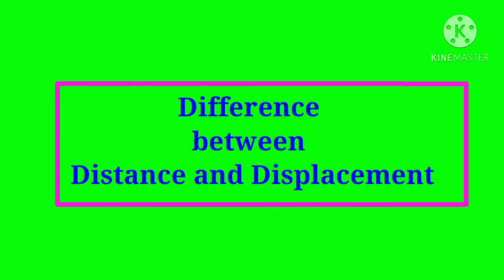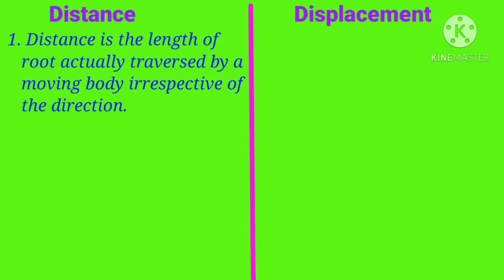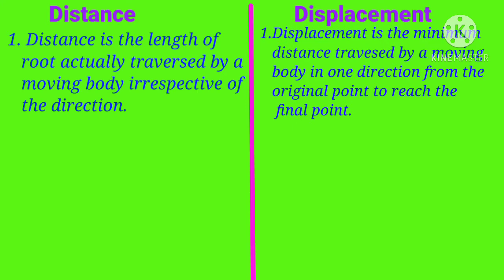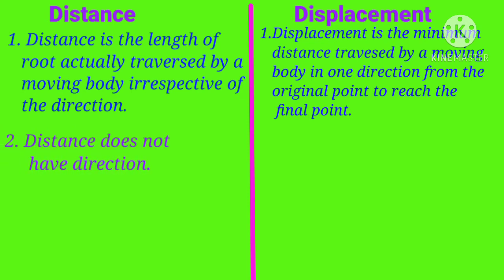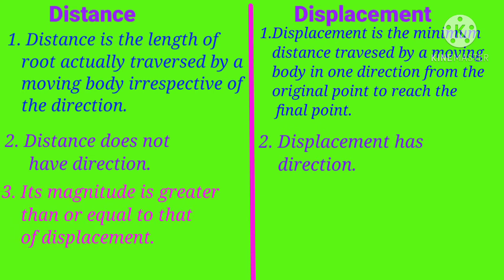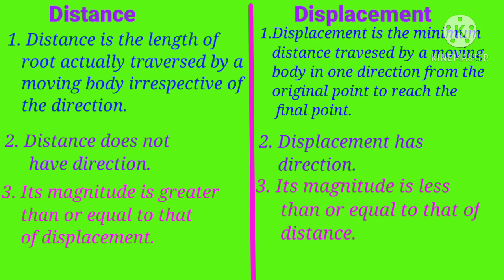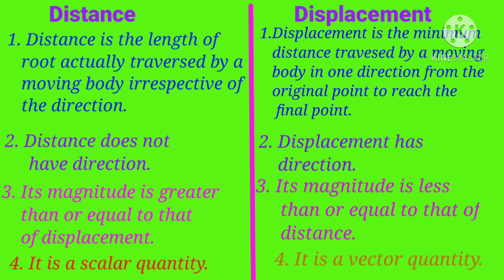Differences between distance and displacement: Distance is the length of the route actually traversed by a moving body, irrespective of direction. Displacement is the minimum distance traversed by a moving body in one direction from the original point to reach the final point. Distance does not have direction, while displacement has direction. The magnitude of distance is greater than or equal to that of displacement, while the magnitude of displacement is less than or equal to that of distance. Distance is a scalar quantity, while displacement is a vector quantity.